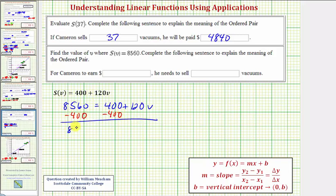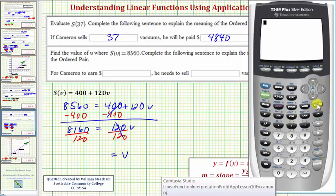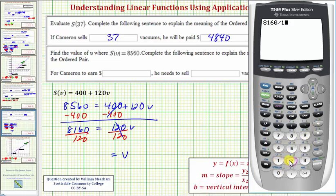So we have 8,160 equals, this is zero, so equals 120V. So last step, divide both sides by 120. Notice on the right, we just have one V or V. So 8,160 divided by 120 is equal to 68.